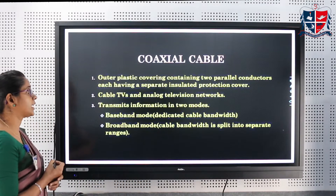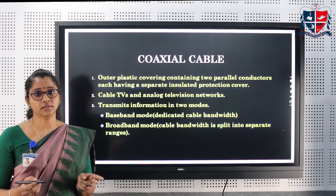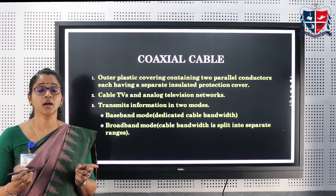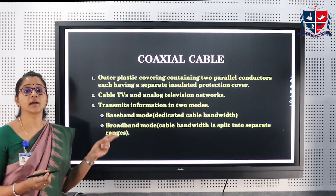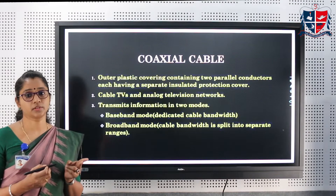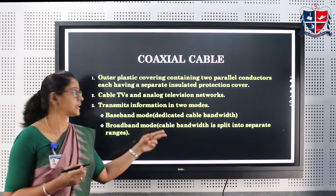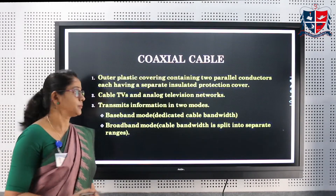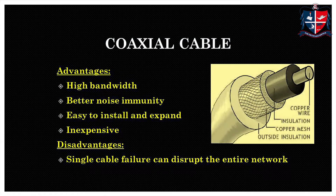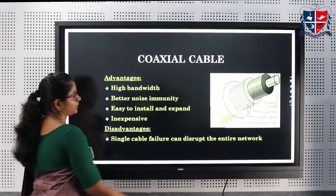Moving on to the coaxial cable. Coaxial cable has an outer covering that contains two parallel conducting wires, and each of these parallel conducting wires are covered with another shield. It is used in cable TV and analog television networks. It has two modes of transmission: baseband and broadband. Baseband means a dedicated cable bandwidth, while in broadband the cable bandwidth is split into desirable ranges. We can see the coaxial cable in the diagram.